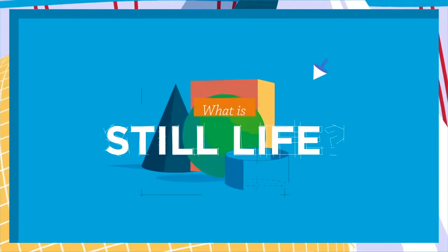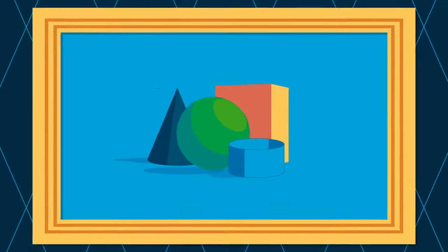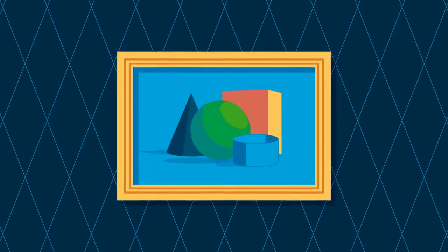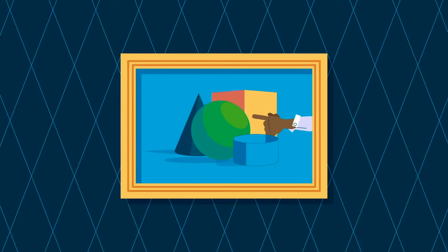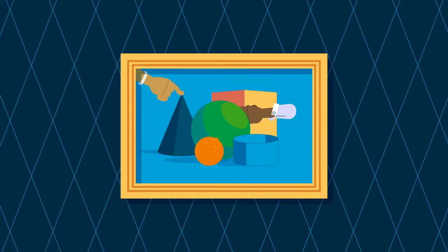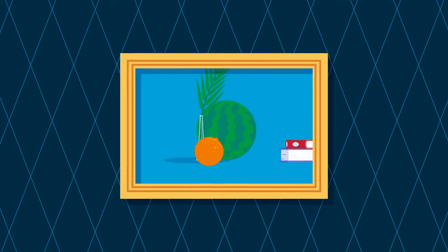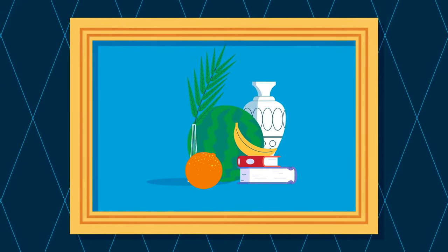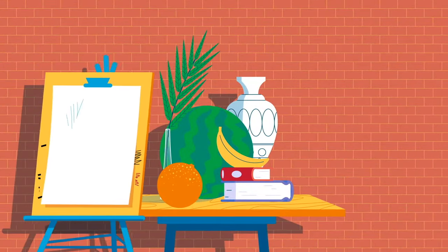What is still life? A still life is an artwork that shows a collection of non-living objects arranged in a specific way by an artist. It can include just about any type of object, but often includes items such as food, plants, books, and vases. A still life artwork can be made with any kind of art medium: drawing, painting, sculpture, printmaking, and more.